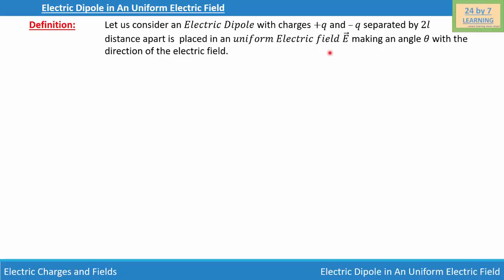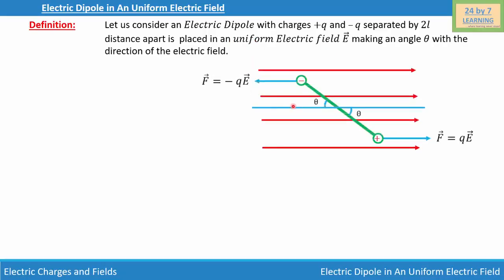To explain the electric dipole in a uniform electric field, I'm going to draw a diagram. Here is the diagram where the electric field is shown in this direction, using red arrows to denote the uniform electric field.